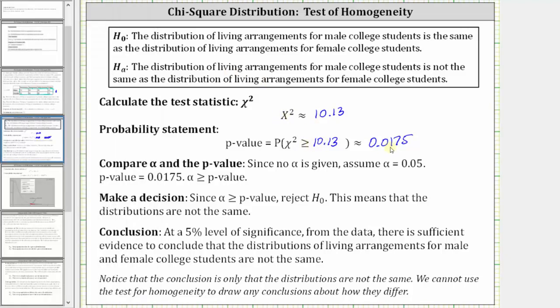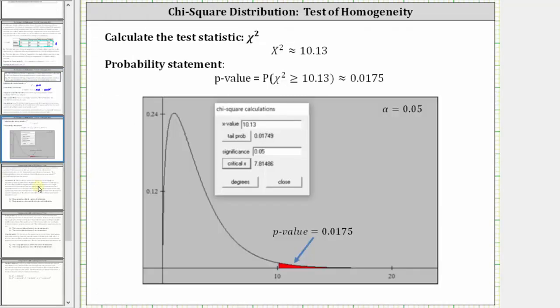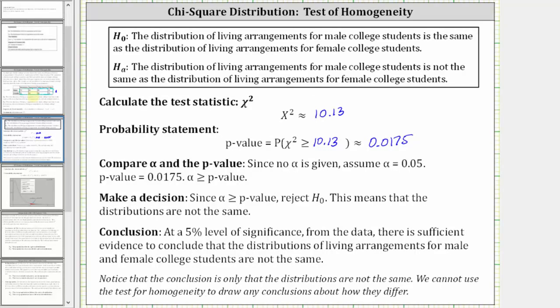Before we compare the p-value to alpha, let's take a look at the graph of the chi-square distribution with three degrees of freedom. The p-value is equal to the area to the right of 10.13 — the shaded area — which is approximately 0.0175. Comparing the p-value to alpha, notice how the p-value is low compared to alpha. When the p-value is low, the null must go. More formally, because the p-value is less than or equal to alpha, we reject the null hypothesis, meaning the distributions are not the same.